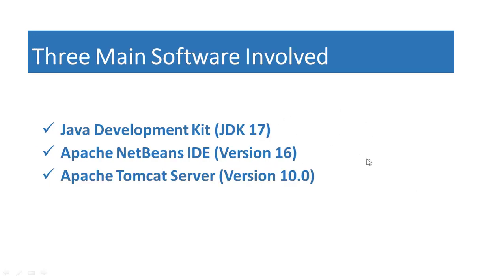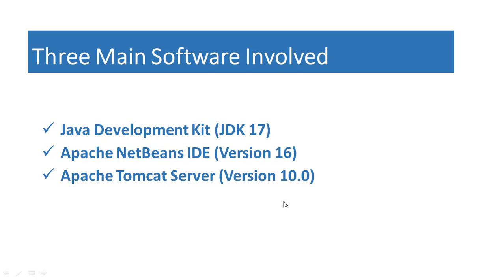There are three main technologies that we are going to work with in this tutorial. The three main software involved are the Java Development Kit JDK 17 which we installed earlier, the Apache NetBeans IDE version 16 which we also installed previously, and the Apache Tomcat server version 10 which we installed earlier. We will be working with these three technologies as we learn how to integrate the Apache Tomcat server in the NetBeans IDE.